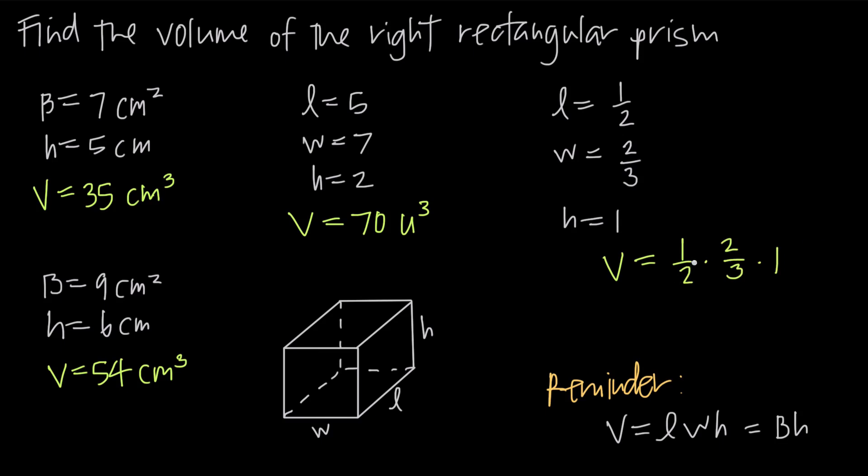I can see right away that I'm going to be able to cancel a 2 from the numerator and denominator. Multiplying by 1 doesn't change the value of the identity here, so all I'm left with then is a volume of 1 third. We'll say cubic units or units cubed because, again, the units aren't specified. And that's how you find the volume of a right rectangular prism.